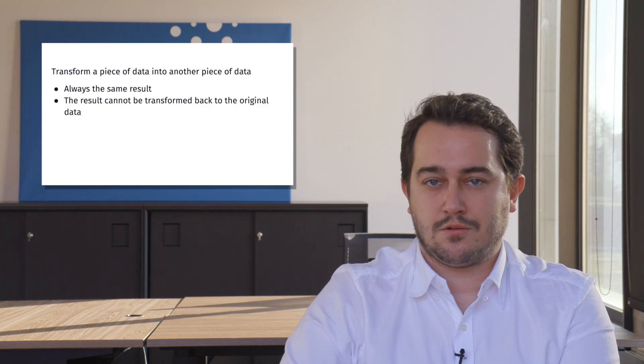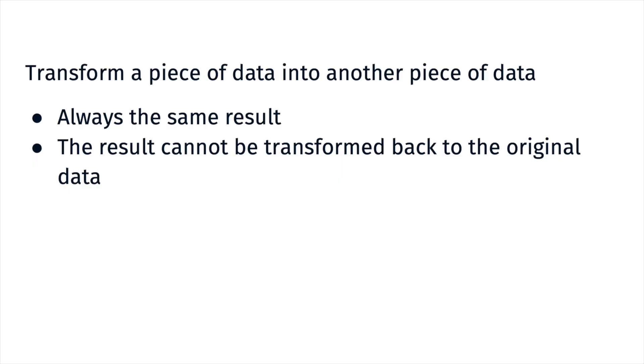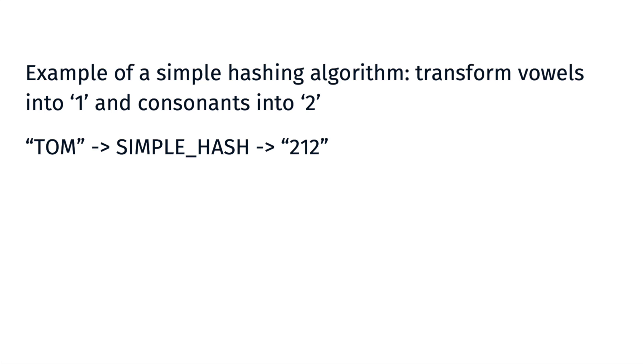Another key self-sovereign identity component is cryptography, and more specifically, key pairs and hashes. Let's start with hashing. When you hash something, you use an algorithm to transform a piece of data into another piece of data. This transformation will always have the same result, and the result cannot be transformed back to the original data. For example, a hashing algorithm might transform vowels into ones and consonants into twos, so 'Tom' will always turn into 2-1-2, but based on this 2-1-2, you cannot go back to 'Tom'.